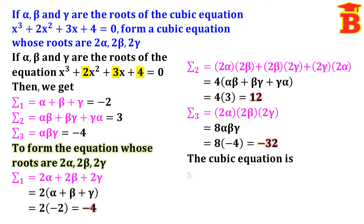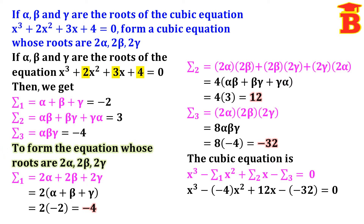Now we can form the cubic equation using the formula: x cubed minus sigma 1 times x squared plus sigma 2 times x minus sigma 3 equal to 0. Substituting: x cubed minus (minus 4) x squared plus 12x minus (minus 32) equal to 0, which simplifies to x cubed plus 4x squared plus 12x plus 32 equal to 0.